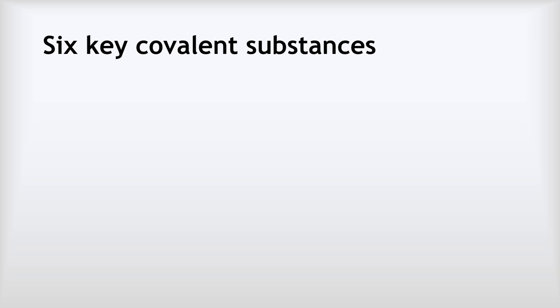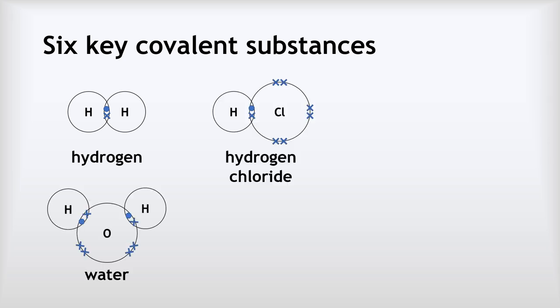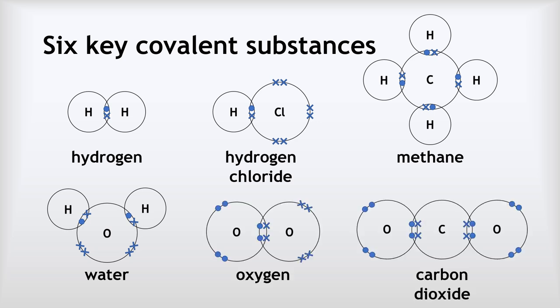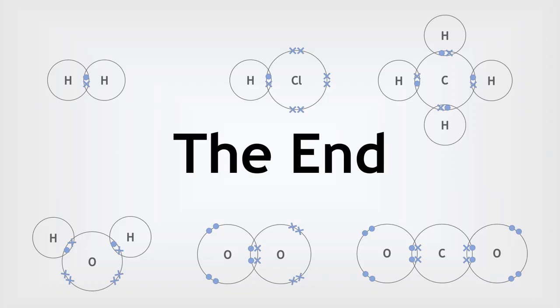If you found all of that quite difficult, perhaps the best thing to do is to memorise these six diagrams, as these are the most common ones named in the syllabus: hydrogen, hydrogen chloride, water, methane, oxygen, and carbon dioxide. Pause the video and take some time to try to memorise those, as they come up quite often. And if you're not sure at all about any of this, you will always get a mark in the exam just for showing you know how to draw a covalent bond — even if you can't get the rest of it. So that's me done. Well done.